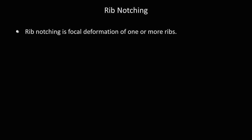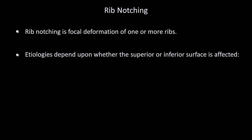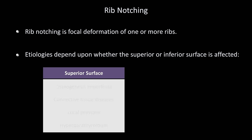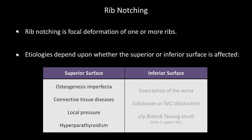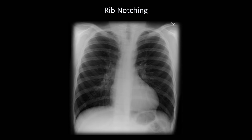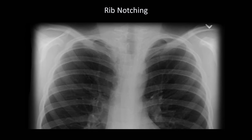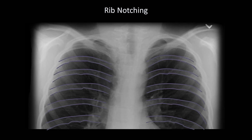Rib notching is the focal deformation of one or more ribs occurring on the rib surface. The etiologies depend upon whether the superior or inferior surface is affected. Notching on the superior surface (less common) can be seen in osteogenesis imperfecta, connective tissue diseases, local pressure, or hyperparathyroidism. Notching on the inferior surface (more common) can be seen in coarctation of the aorta, subclavian or SVC obstruction, and in patients status post a Blalock-Taussig shunt, in which only the two upper ribs will be notched. Notice how the superior surfaces of the ribs are smooth, while some inferior surfaces are ever so slightly jagged.